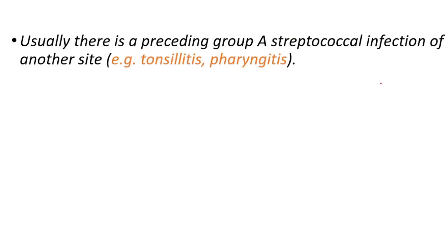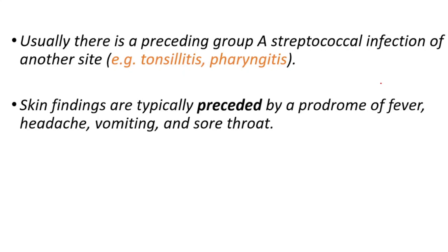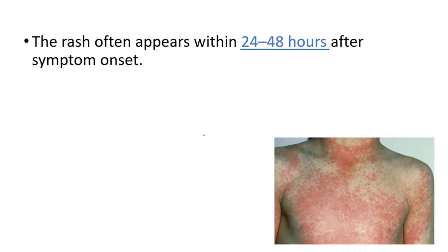Usually there is a preceding group A streptococcal infection at another site — it can be tonsillitis or pharyngitis. Skin findings are typically preceded by a prodromal fever, headache, vomiting, and sore throat, after which we can see skin findings.